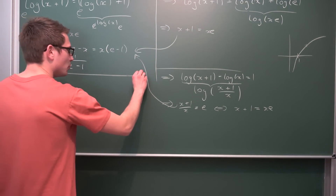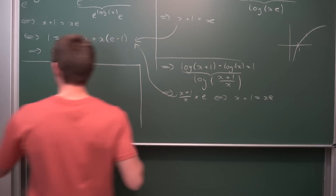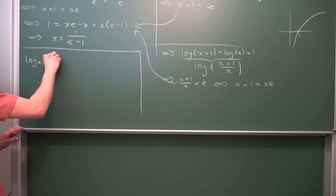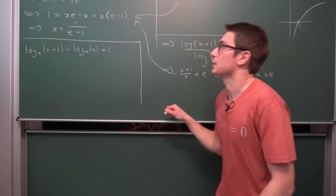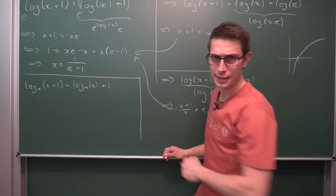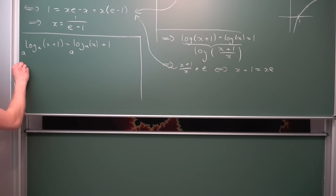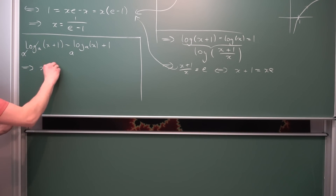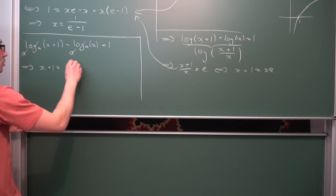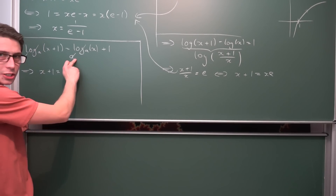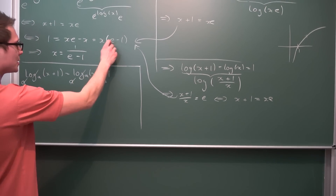But now we are going to generalize this a tiny bit more. At the moment we have only talked about the natural log, but there are other logarithms to other bases. For example, just the logarithm to the base a of x plus 1 is equal to logarithm to base a of x plus 1. The procedure is completely analogous. We are going to use base a on both sides — a and log base a cancel out to give us x plus 1 is equal to a to the log base a of x, and log and a cancel to give us x. By the functional equation we get x times a to the first power, which is just a.